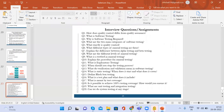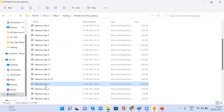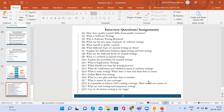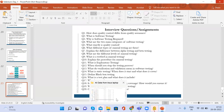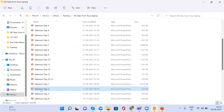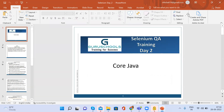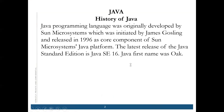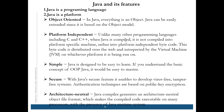Now coming to the next topic which is today's main topic — we are going to start the Java portion, specifically core Java. About a little bit of the history of Java: the Java programming language was originally developed by James Gosling in 1996. Previously it was also called Oak, and now it is called Java.